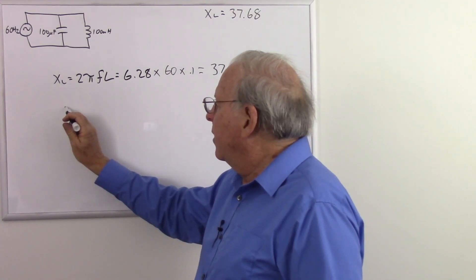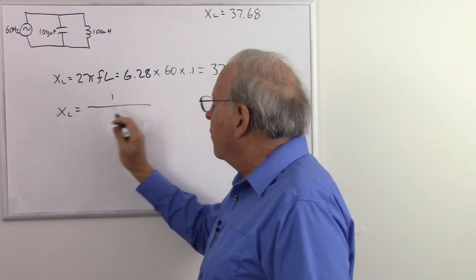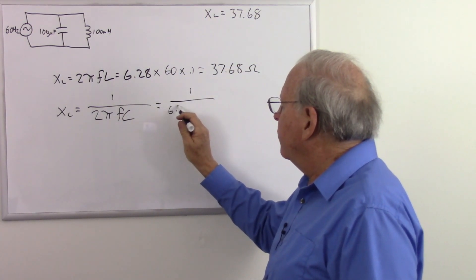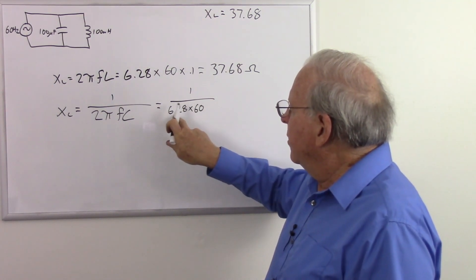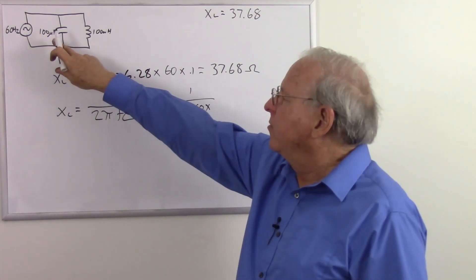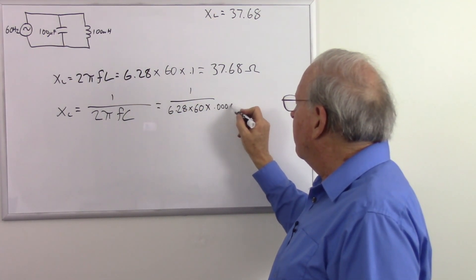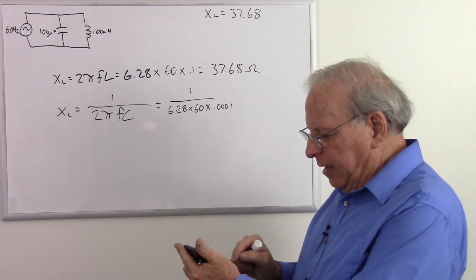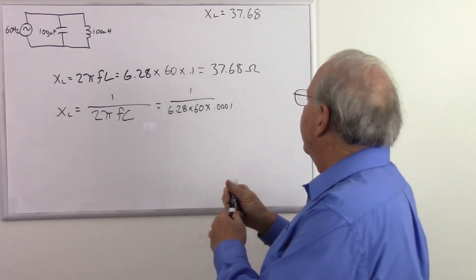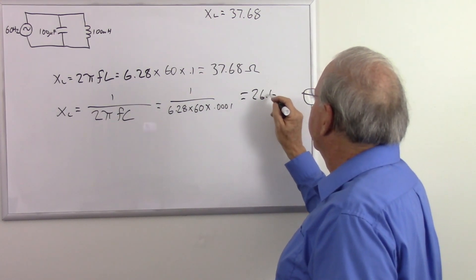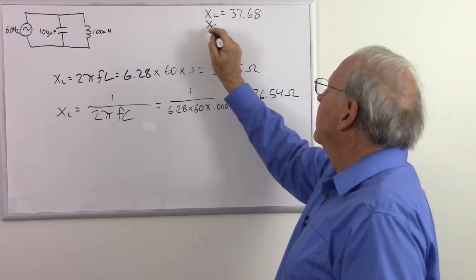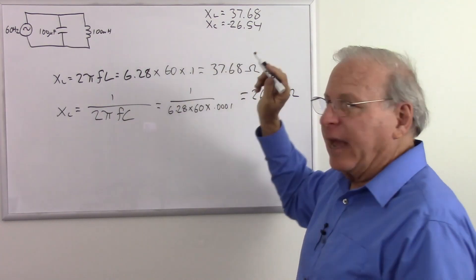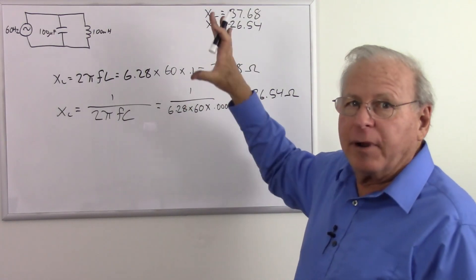Now let's calculate our capacitive reactance. Capacitive reactance equals 1 over 2π f C, which equals 1 over 6.28 times 60 times our capacitance of 100 microfarads, which is 0.0001. So 6.28 times 60 times 0.0001 equals — take the reciprocal — and I got 26.54 ohms. I'm going to put a negative here just to remind us that capacitive reactance is negative compared to inductive reactance when we do the math.